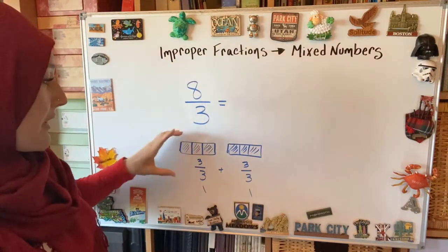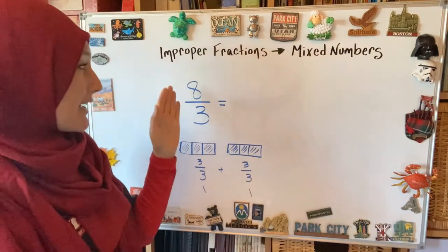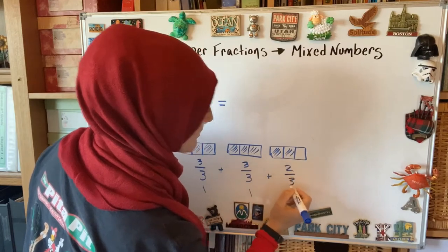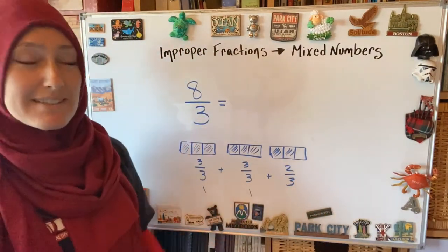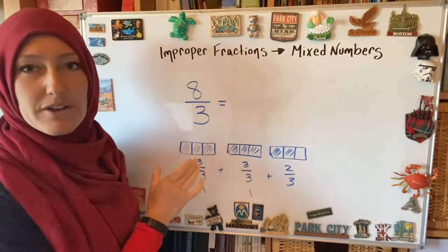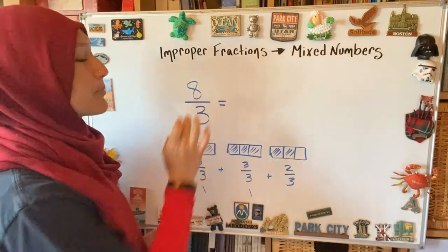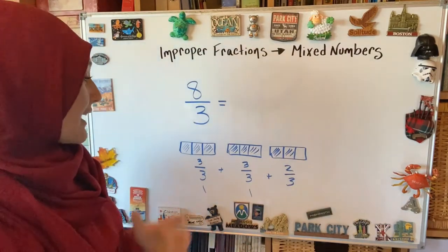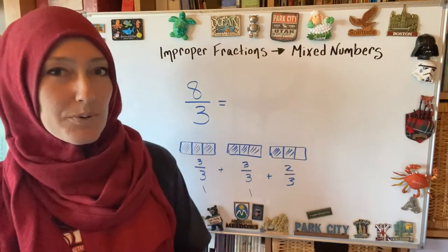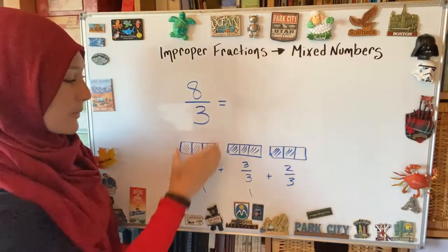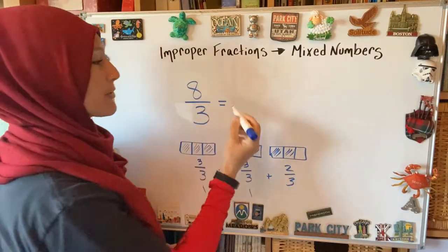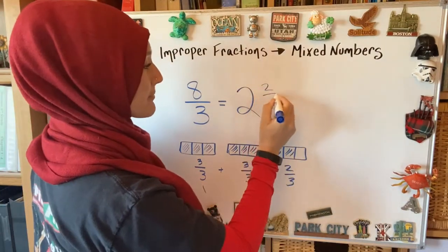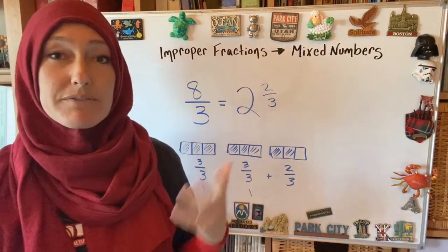We already know there's three-thirds and another three-thirds — that's six-thirds. Then I show my last two-thirds. So visually, this is a third-sized part, and the numerator tells us how many we have: one, two, three, four, five, six, seven, eight pieces. Looking at this, you can see there are whole amounts — one whole and another whole. Written as a mixed number, we have two wholes and two-thirds left over.